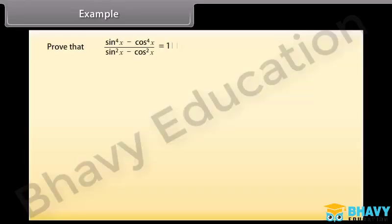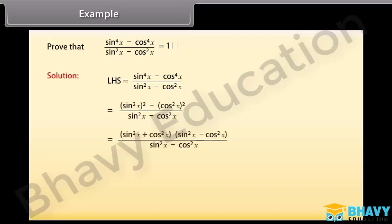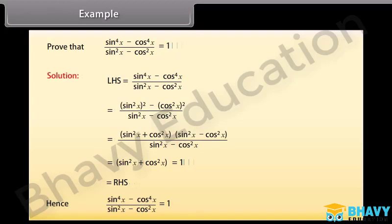Example 2. Prove that (sin⁴x − cos⁴x) / (sin²x − cos²x) is equal to 1. Solving the left-hand side, (sin⁴x − cos⁴x) / (sin²x − cos²x), we get 1, which is equal to the right-hand side. Hence, (sin⁴x − cos⁴x) / (sin²x − cos²x) is equal to 1.